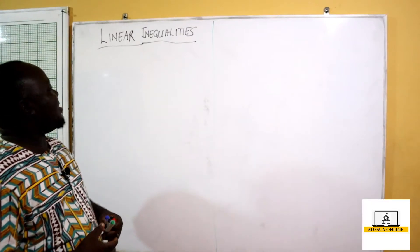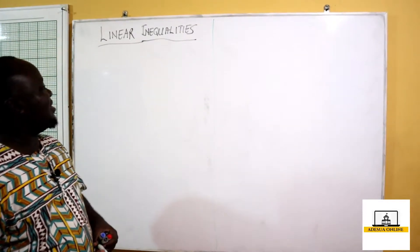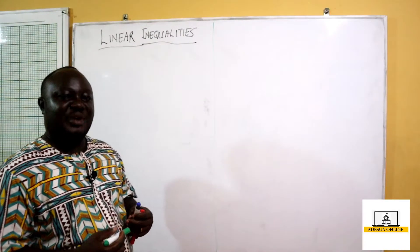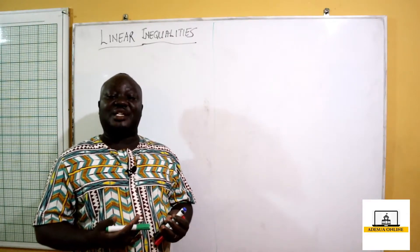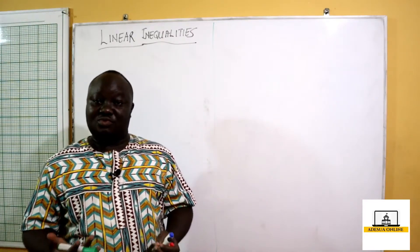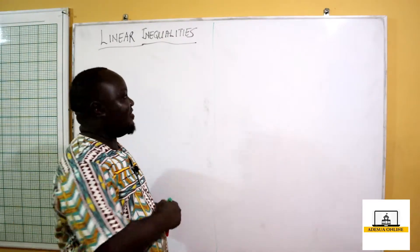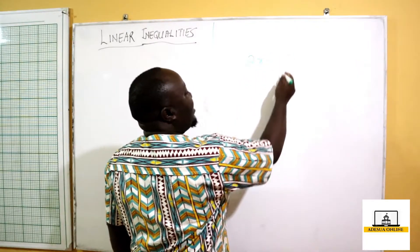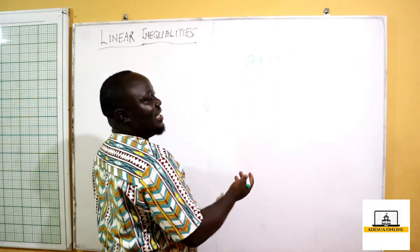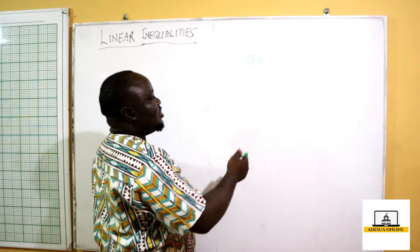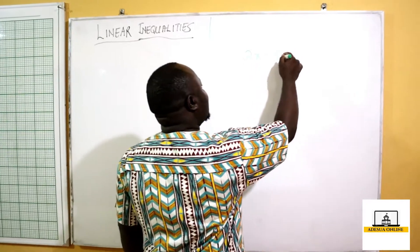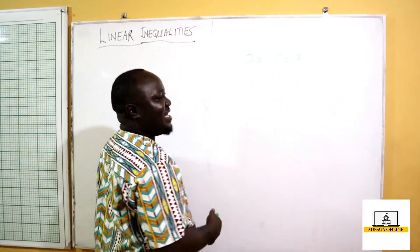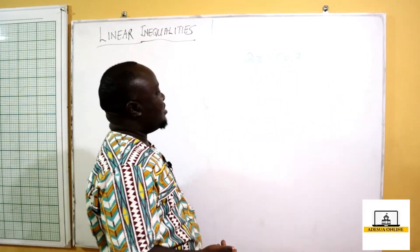So when we talk about linear inequalities, the word linear means if we have a variable with an exponent of one. So if I have 2x plus 5, this is a linear expression. So when there's equal to, let's say equal to 7, it becomes a linear equation.